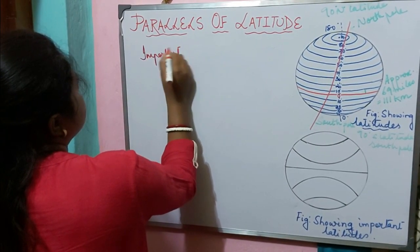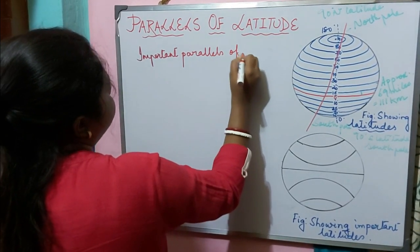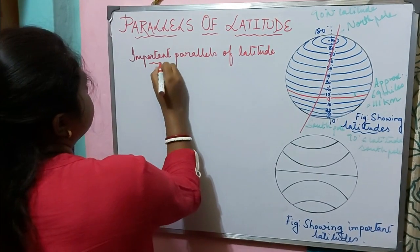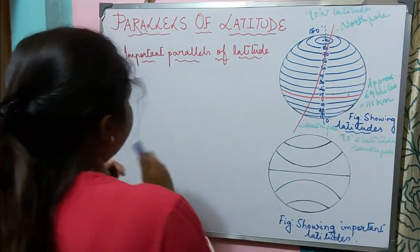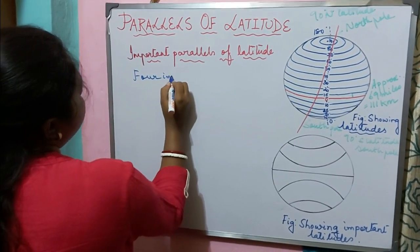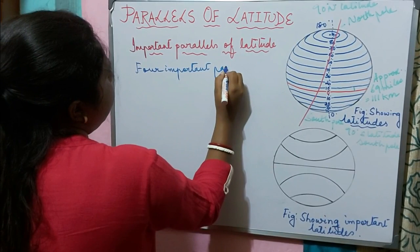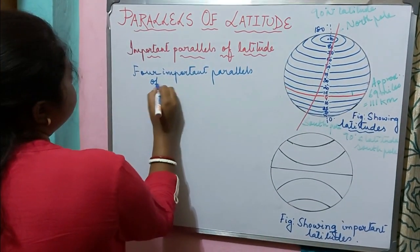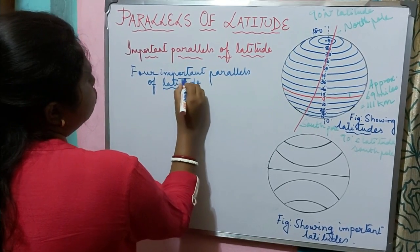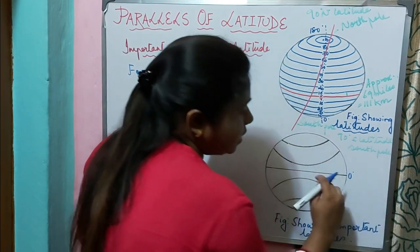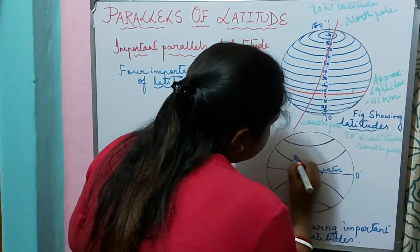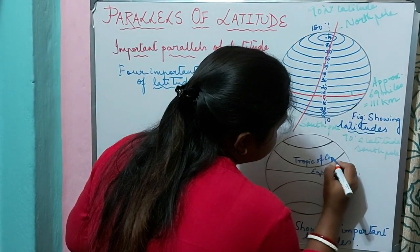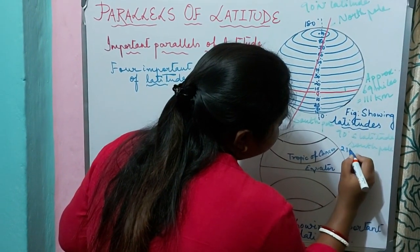Now let us know about the important parallels of latitude. The first is the equator — we know it is the longest latitude, the longest circle. Next is the Tropic of Cancer, which is located at 23 and a half degrees north latitude.